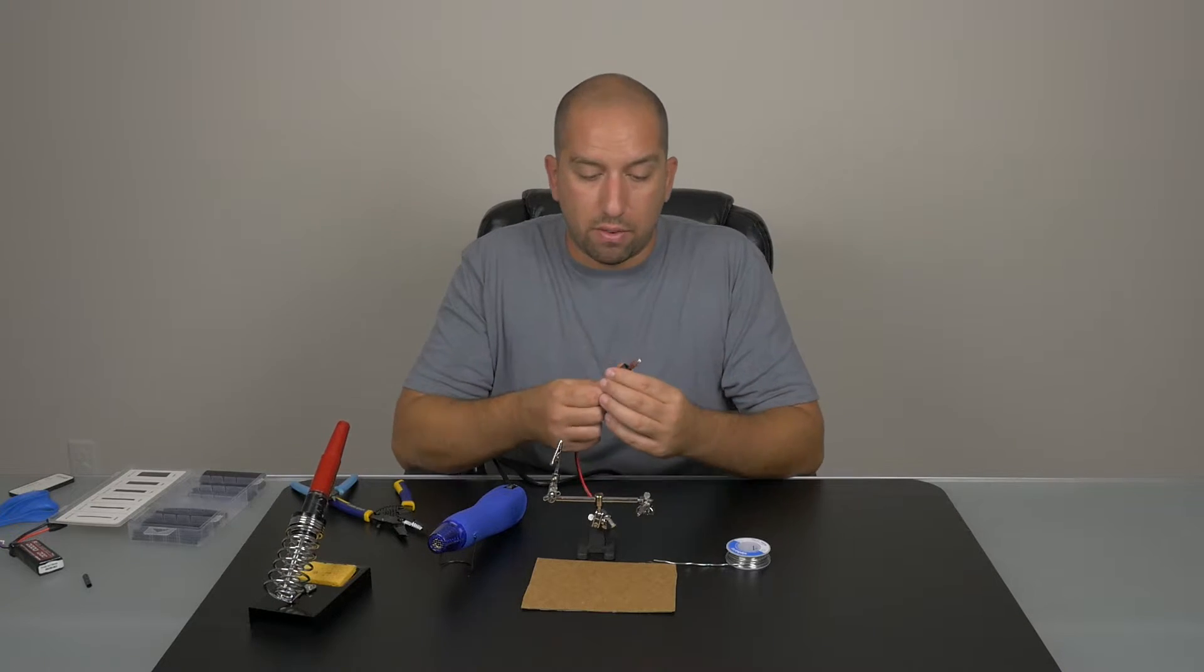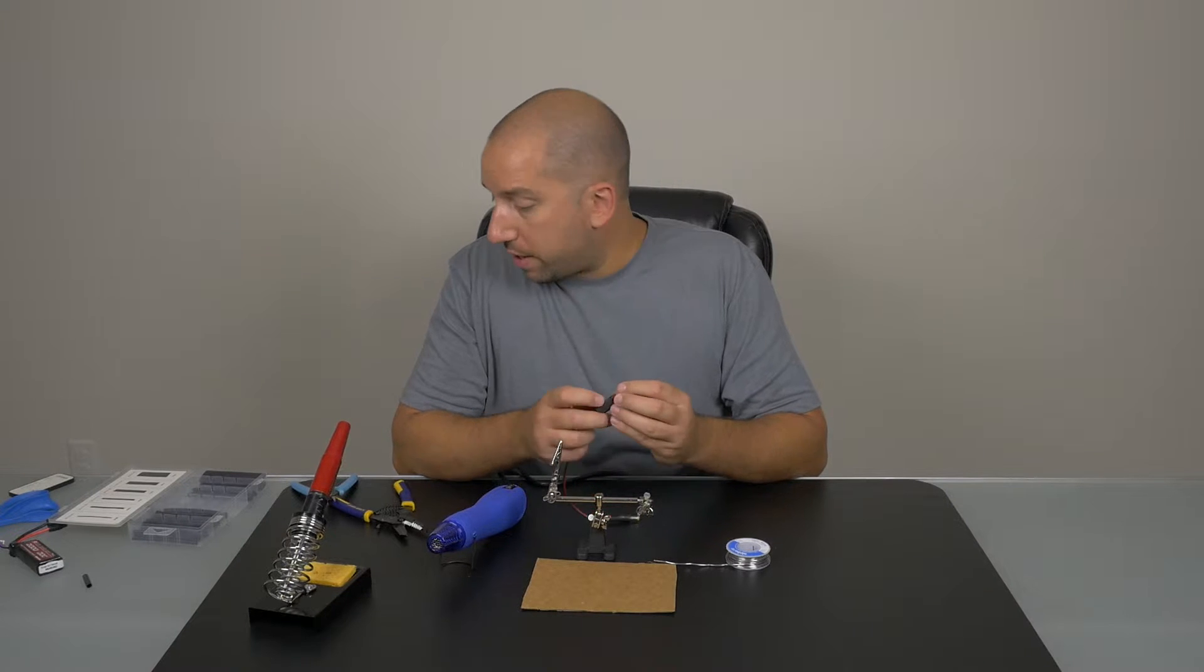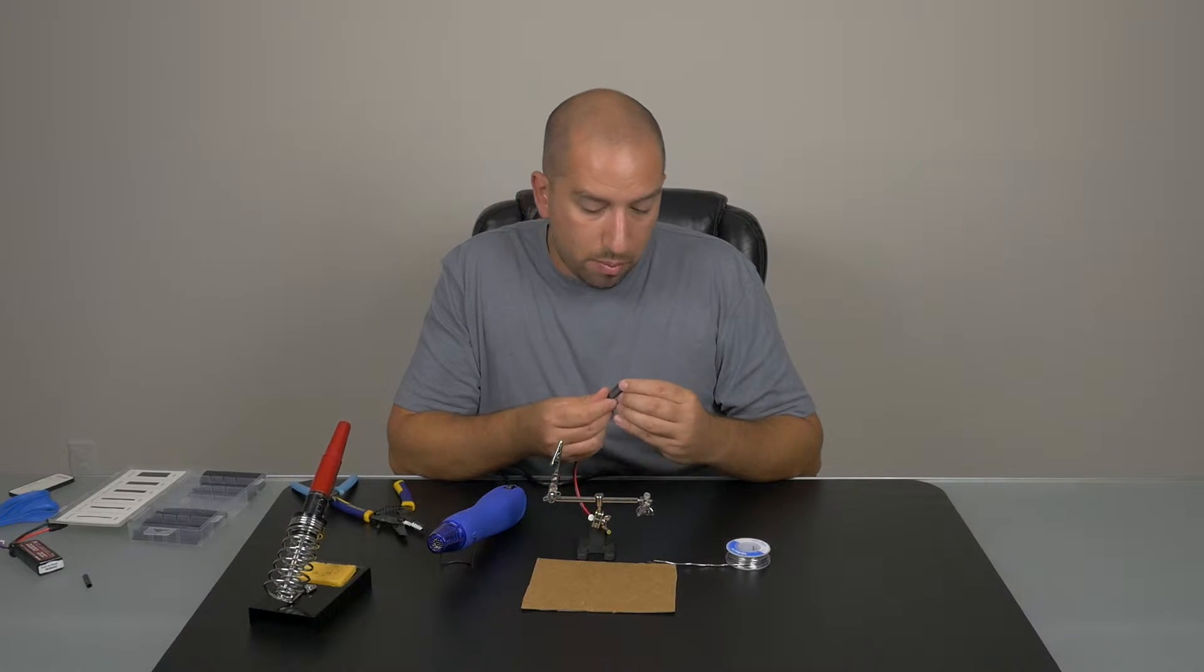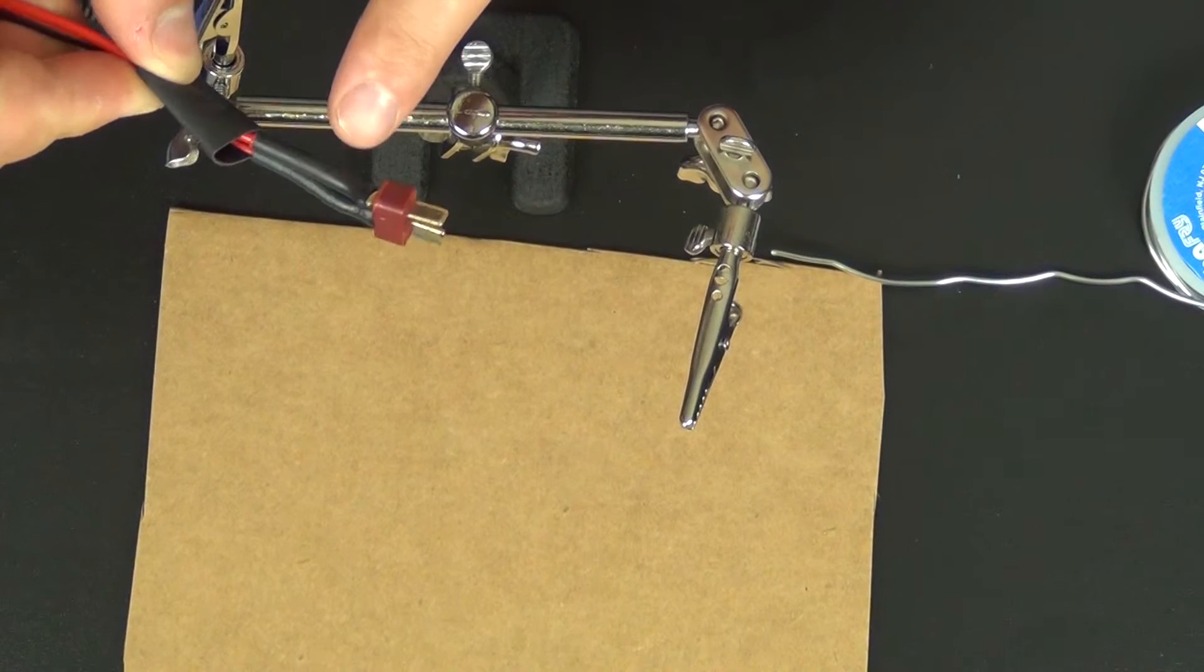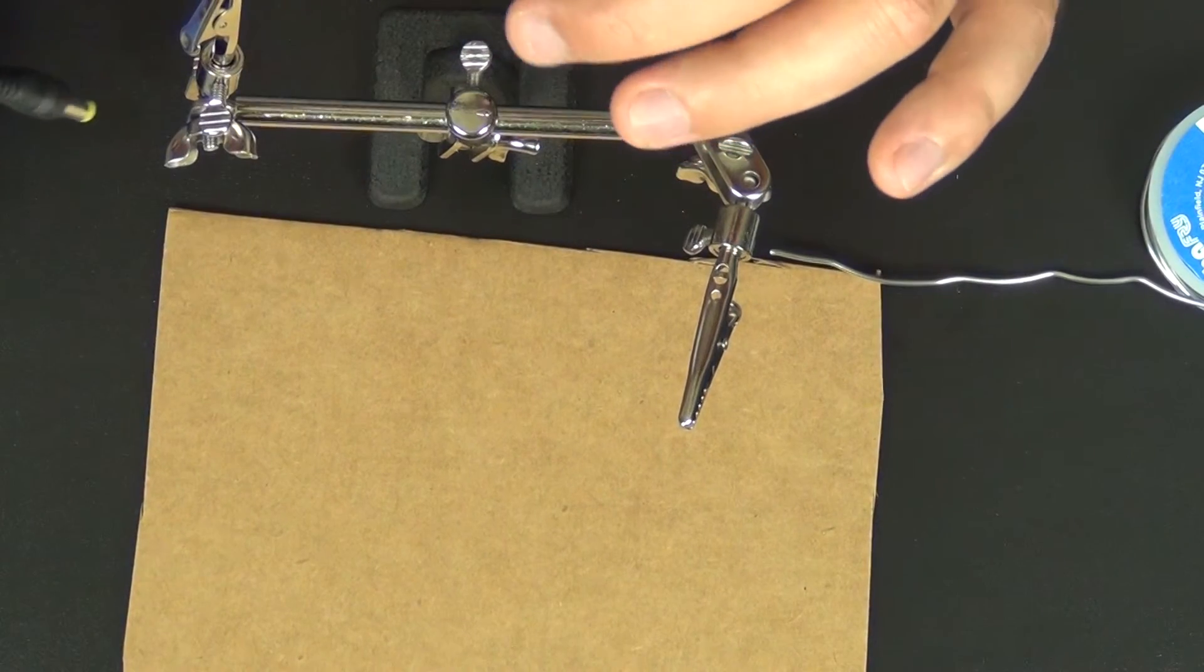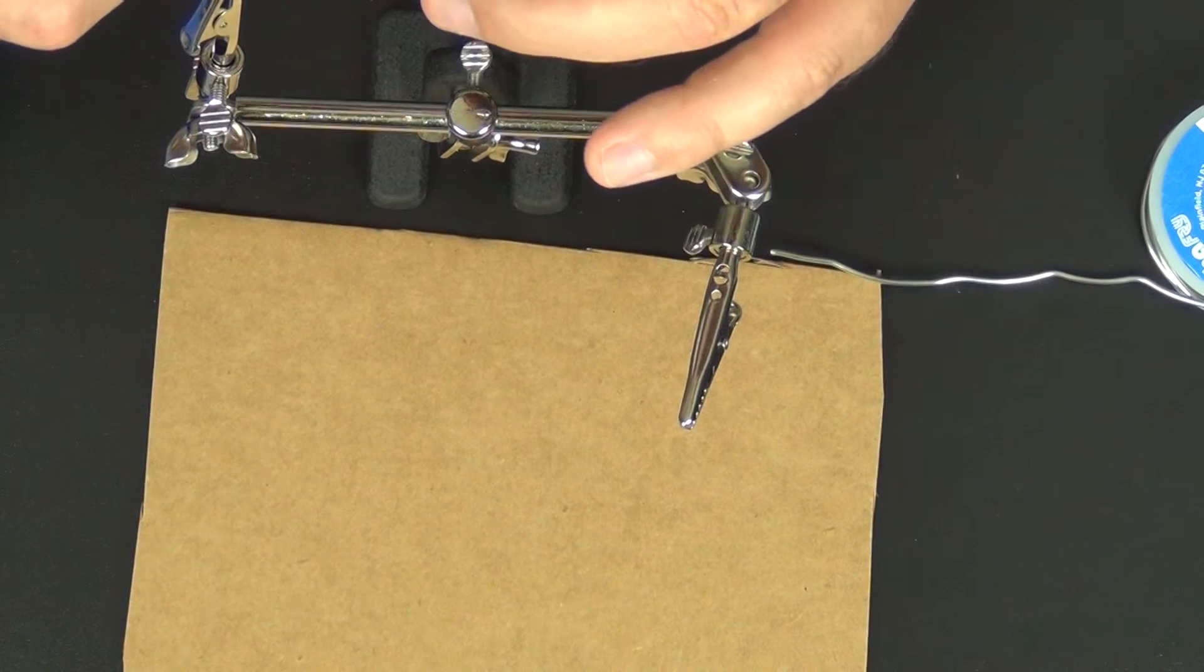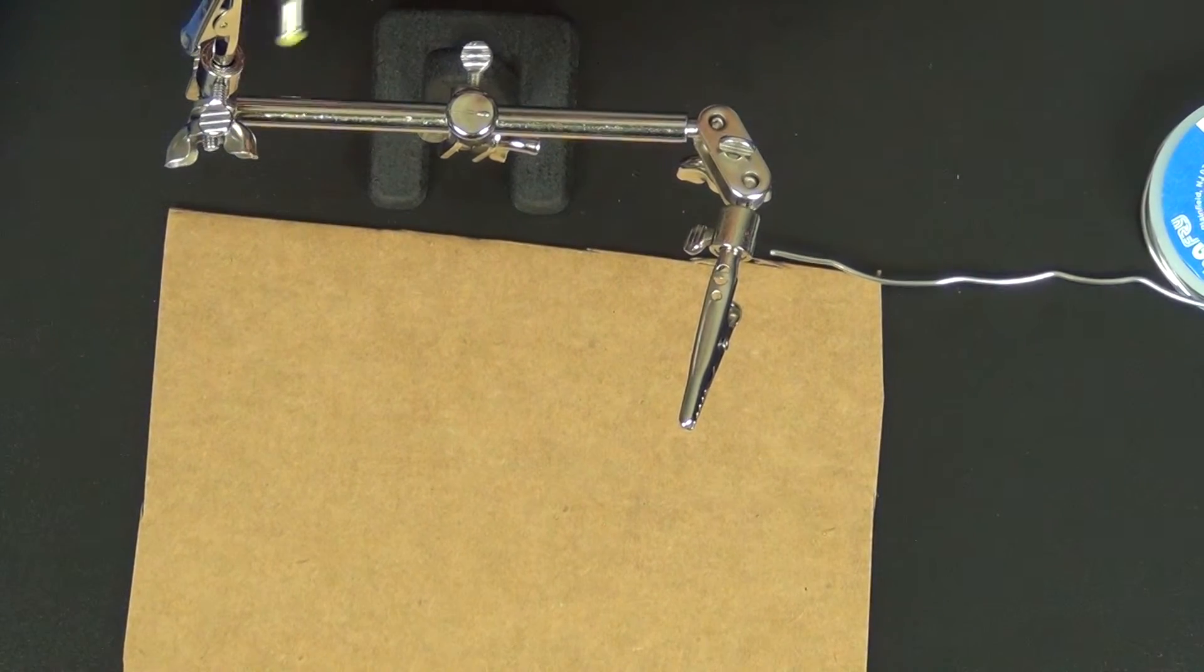So what we're doing here now is sliding over a half inch inside diameter heat shrink. And basically what we're doing here is we're just giving a little more added security. You can see that the heat shrink didn't cover completely the hot side. So I want to make sure that we don't have any issues with that when we're in the field. So we're just going to slip this over here and shrink it down.